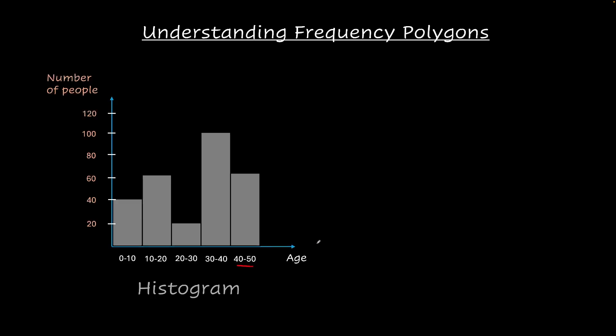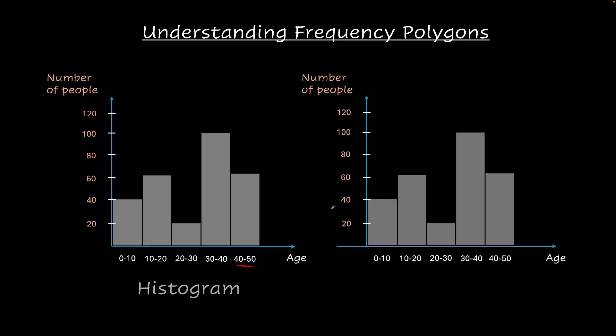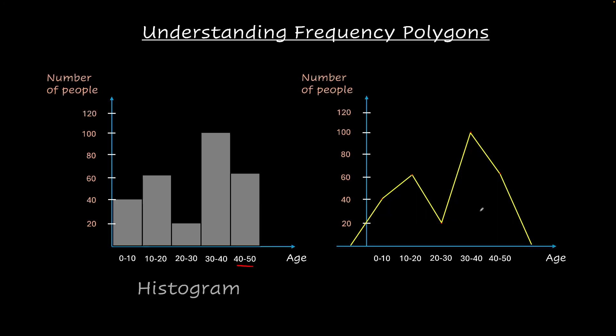Now, this same data can be represented in a slightly different, visually different way. Let's see how. So here I have the same histogram and what I'm going to do is join the midpoints of the tops of these lines. Let's see how that looks like. Let's join them and let's remove this part.